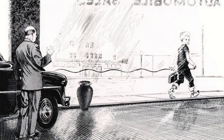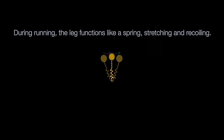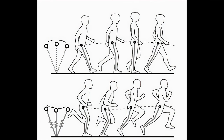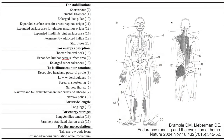When it comes to running, the leg assumes a different role, functioning like a spring — stretching and recoiling. The spring stretches as the centre of mass falls in the first half of stance and recoils to help the body push up in the second half of stance and then into a jump. Unlike in walking, the body's kinetic energy and its potential energy are in phase, and this reversal again allows us to save energy for locomotion at faster speeds. Collagen-rich tendons and ligaments such as the Achilles tendon and the plantar fascia — the Achilles being much larger in humans compared with apes and chimps — allow us to store elastic strain energy during the initial braking part of the support phase and then release the energy through recoil during the subsequent propulsive phase.